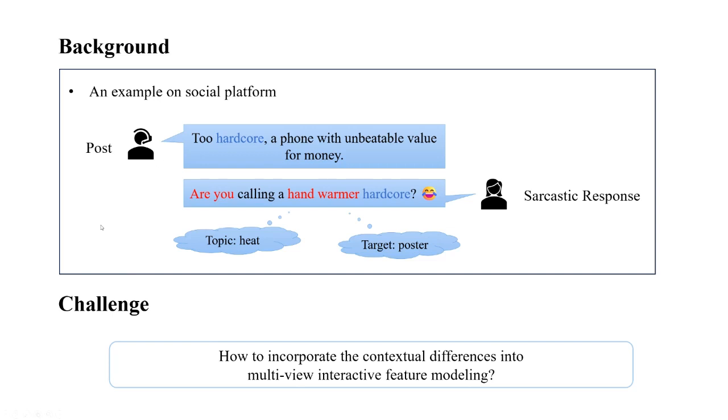On social platforms, users often use a variety of implicit sarcasm comments to express their opinions on products or events. For example, a comment on the mobile phone "too hardcore, a phone with unbeatable value for money" triggered a sarcastic response: "Are you calling a hand warmer hardcore?" This reply accompanies the heat dissipation and the poster by using personal pronouns, hand warmers, and emojis.